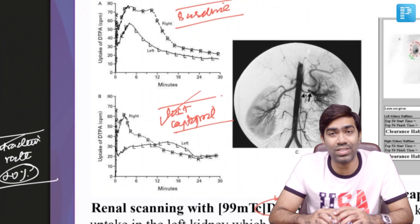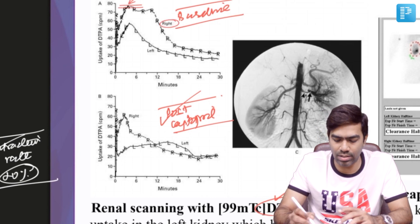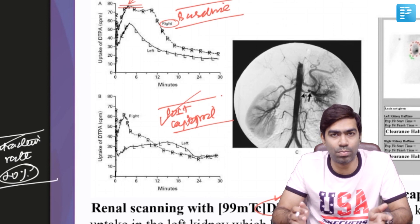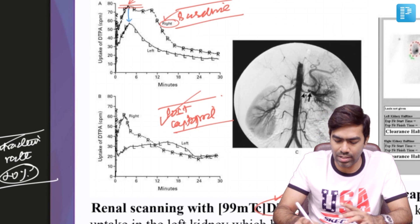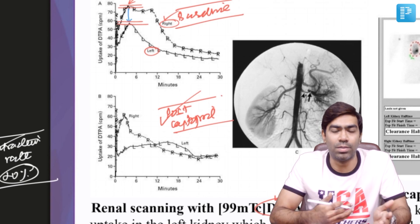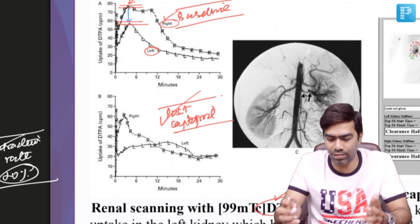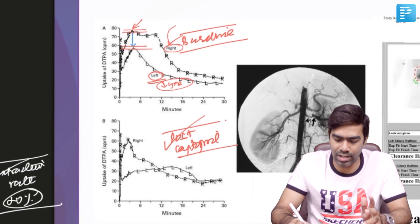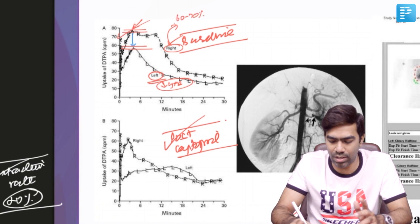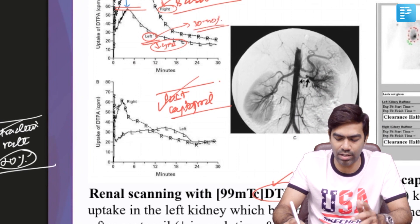In a renogram of a patient with suspected renal artery stenosis using DTPA, the right kidney shows very good uptake — the peak is good, overall uptake is good, and the time to reach that peak is reasonably normal, indicating relatively normal GFR. On the other hand, the left kidney shows significant diminution in the peak, the time to reach that peak is slightly delayed, and the GFR of the left kidney is very poor. The right kidney contributes approximately 60–70% and the left kidney approximately 30–40% of net renal function at baseline.